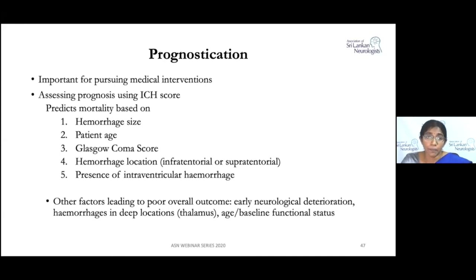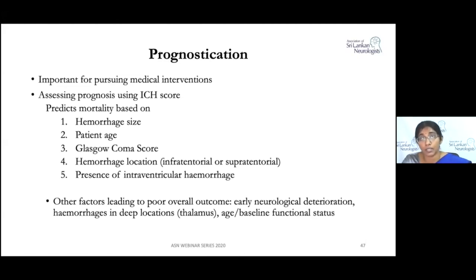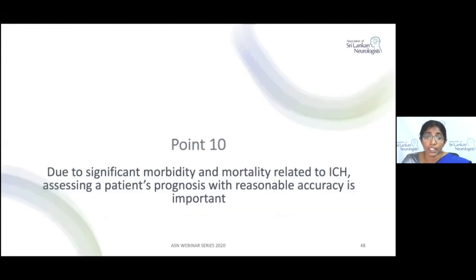Prognostication is important at the time of admission. The ICH scoring system has five components: size of hemorrhage, age, Glasgow Coma Scale, location of hemorrhage (infratentorial or supratentorial), and presence or absence of intraventricular hemorrhage. A higher score indicates a worse outcome. Factors associated with poor prognosis include early neurological deterioration, deep-seated hemorrhage especially thalamic bleeding, low baseline functional status, and advanced age.